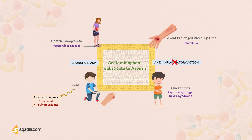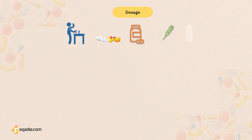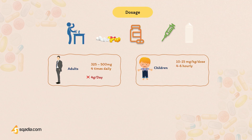Acetaminophen is usually administered orally as a tablet or capsule in adults, and as syrup, oral solution, or suspension for children. Intravenous and rectal suppository routes are available for both adults and pediatric patients. In adults, acute pain and fever may be effectively treated with 325 to 500 milligrams four times daily, not exceeding four grams per day. In children, the dosage is 10 to 15 milligrams per kilogram per dose, given orally every four to six hours, not exceeding five doses or 2.6 grams in 24 hours.